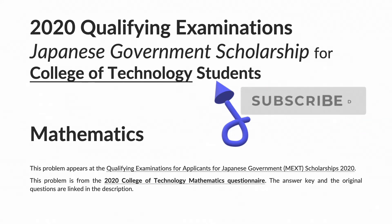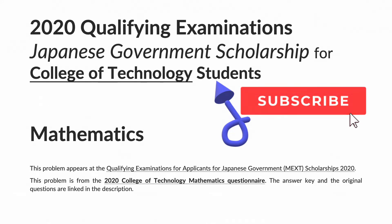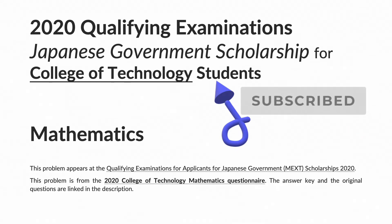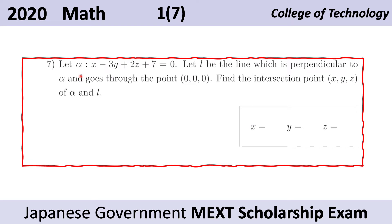This problem appears at the qualifying examinations for applicants for Japanese government or MEXT scholarships 2020, from the 2020 college of technology mathematics questionnaire. The answer key and original questions are linked in the description. We are given a plane alpha with equation x minus 3y plus z plus 7 equals 0, and a line L that is perpendicular or normal to alpha and goes through the origin. The problem is to find the intersection between L and alpha.